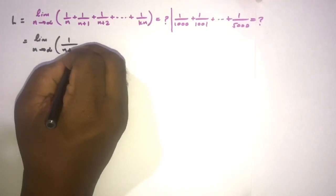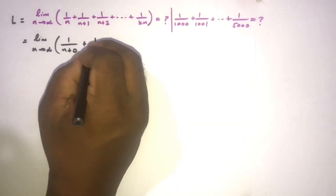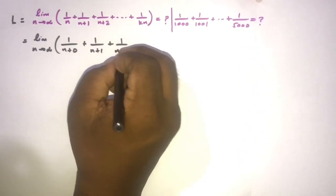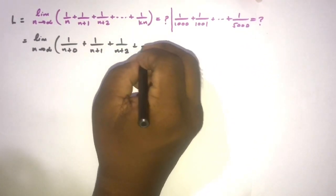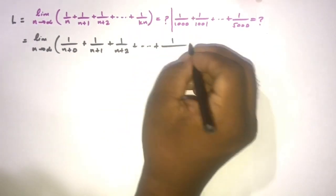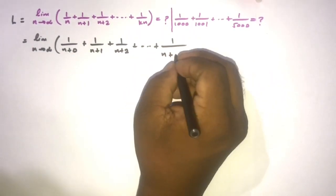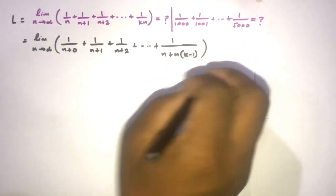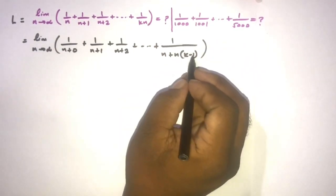Like here, 1 over n plus 0, plus 1 over n plus 1, plus 1 over n plus 2, plus the last term, 1 over n plus n times k minus 1. Now if we simplify this, we know n times minus 1 minus n, n gets cancelled, and we will have n times k.